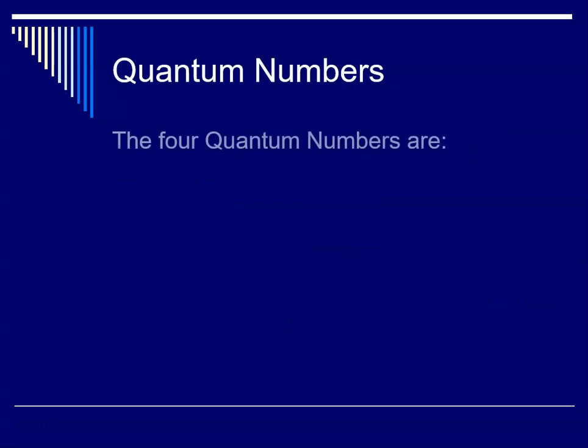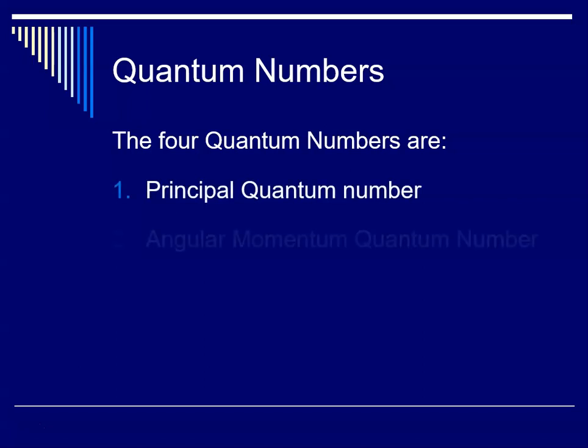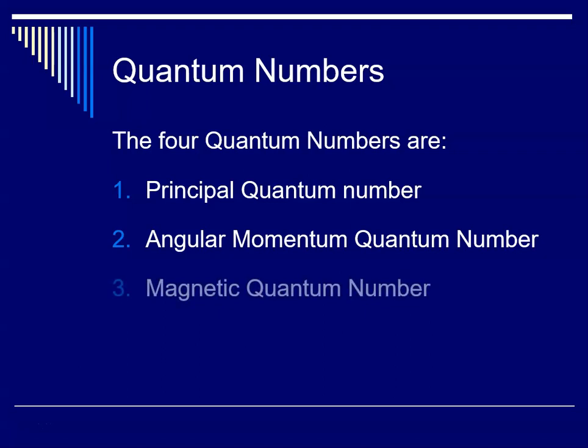So, a brief review, the four quantum numbers are: number one, the principal quantum number. The second is the angular momentum quantum number. The third is the magnetic quantum number. And the fourth is the so-called spin quantum number. So let's take them one at a time.